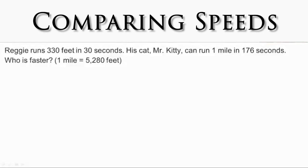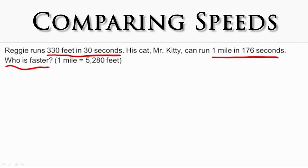Let's look at this example of converting speed to compare. Reggie runs 330 feet in 30 seconds. His cat, Mr. Kitty, can run one mile in 176 seconds. Who is faster? In order to determine who is faster, we need to convert both Reggie's speed and Mr. Kitty's speed to a unit rate. Once we've done that, we can compare them. But we also need to make sure that the unit rates involve the same units of measure — in this case, feet per second.